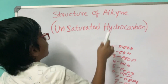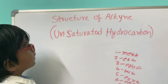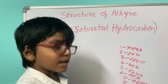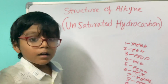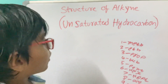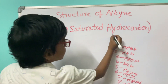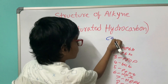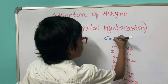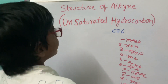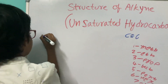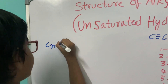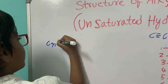We will see the structure of alkyne. Alkyne has at least one triple covalent bond. The formula for alkyne is CnH2n.